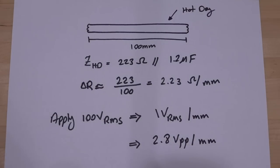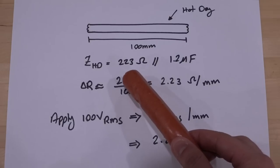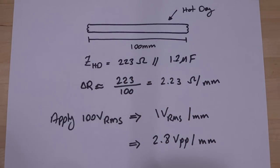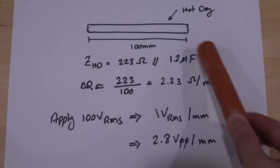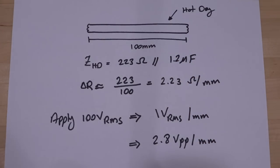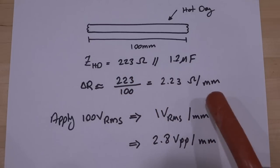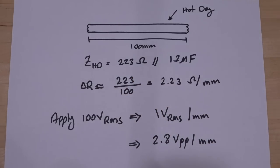Let's do a quick calculation. If you have a hot dog that's 100 millimeters long with an impedance of 223 ohms in parallel with 1.2 microfarad, and we apply something at 60 hertz from a city line to it, the impedance of the 1.2 microfarad doesn't matter so much. It's still a much larger impedance than the 223, so the dominant source that determines the current through it is the resistive part. We find it's about 2.23 ohms per millimeter. If we apply 100 volt RMS to it, the voltage is evenly distributed across the hot dog. We're going to get 1 volt RMS per millimeter, or 2.8 volt peak-to-peak per millimeter.